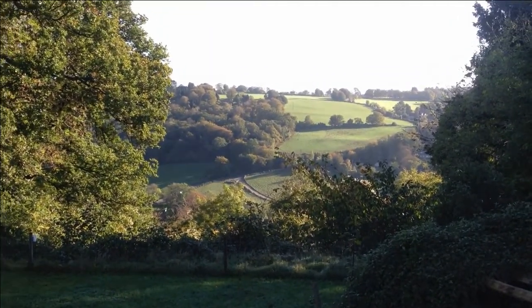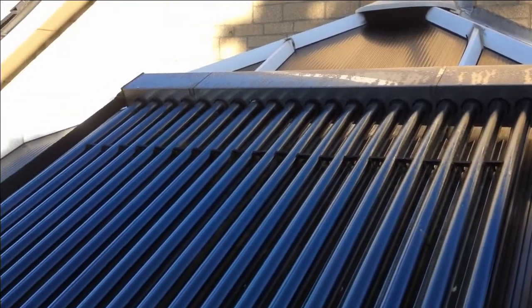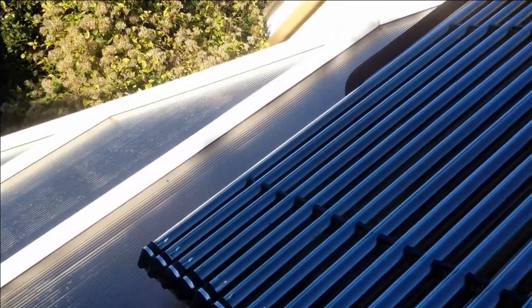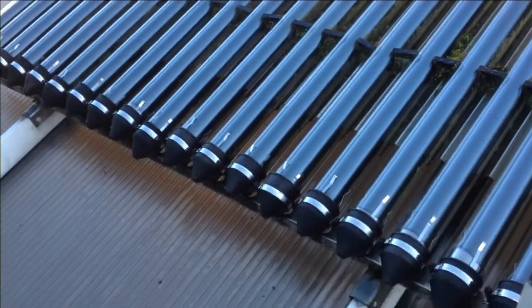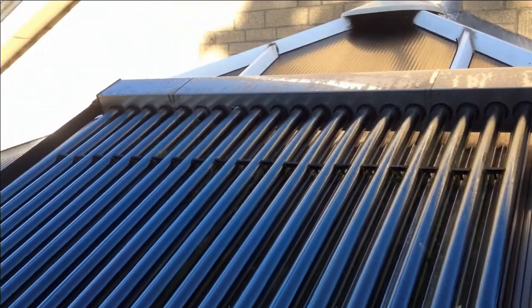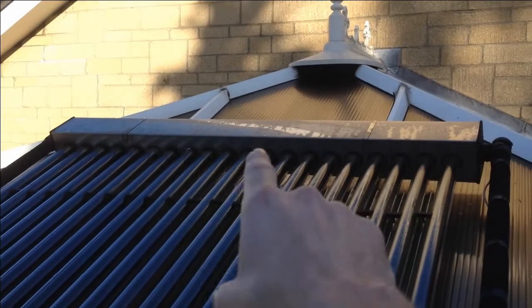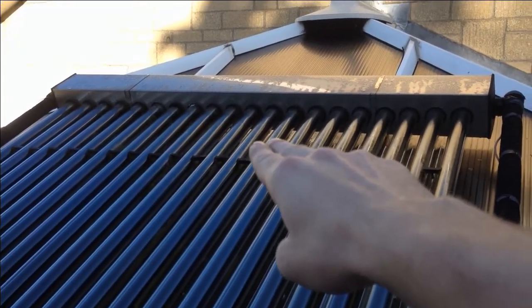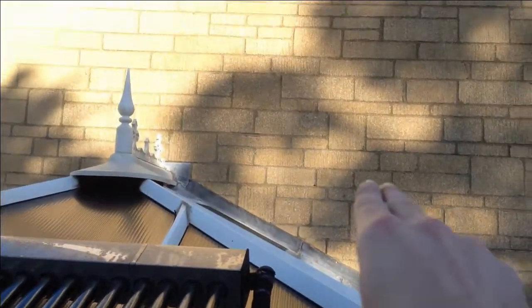So here we are at the panel and apart from this lovely view we have a nice 20 evacuated tubes for our solar panel. As you can see the sun hasn't quite reached it yet today it's still quite early in the morning but we can see the operation of this the manifold at the top where you have the water coming in being heated by conduction through the centres of these tubes and then the warm water going back in to the main house.